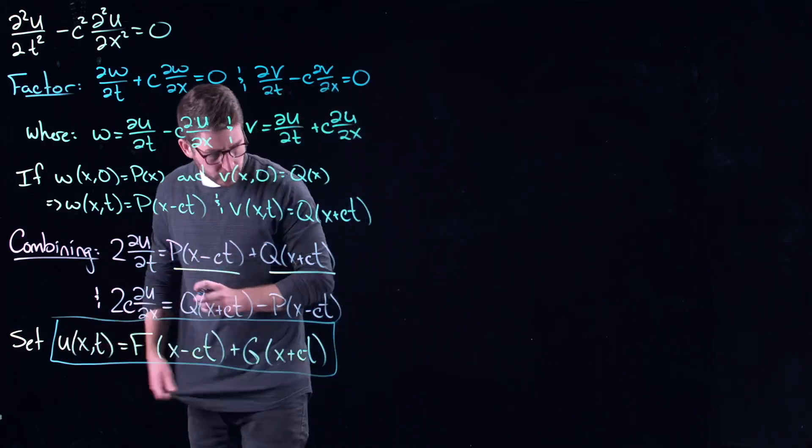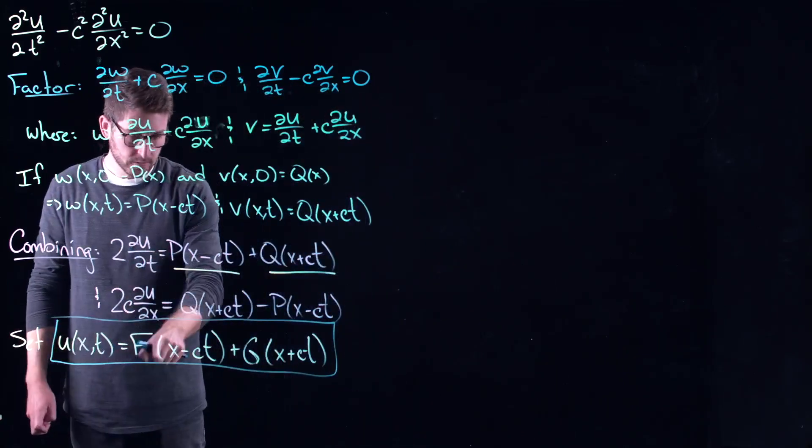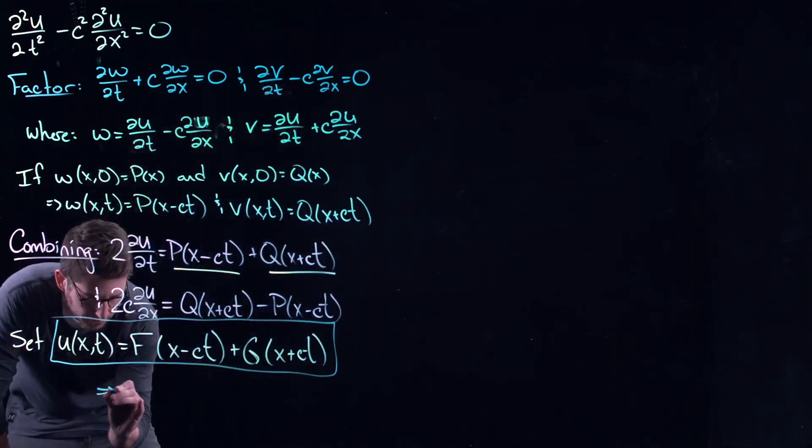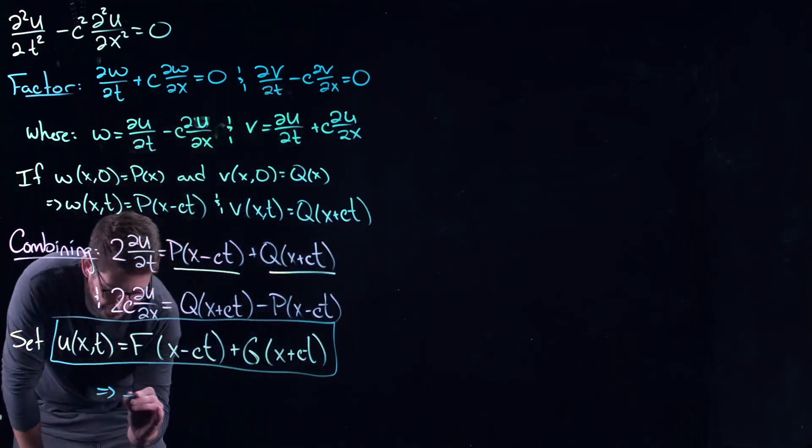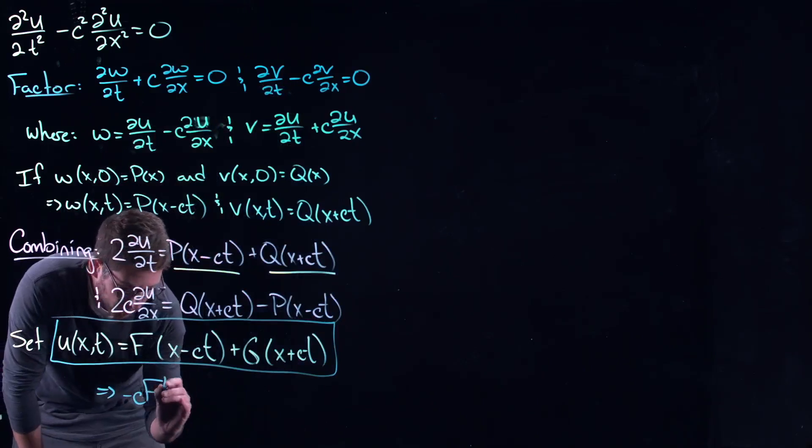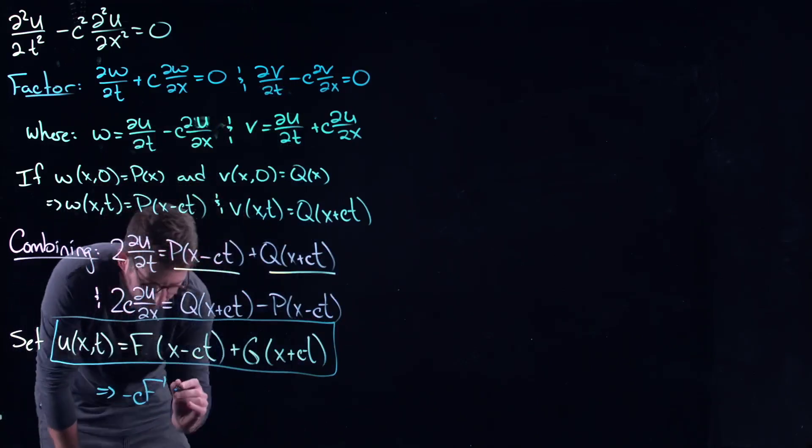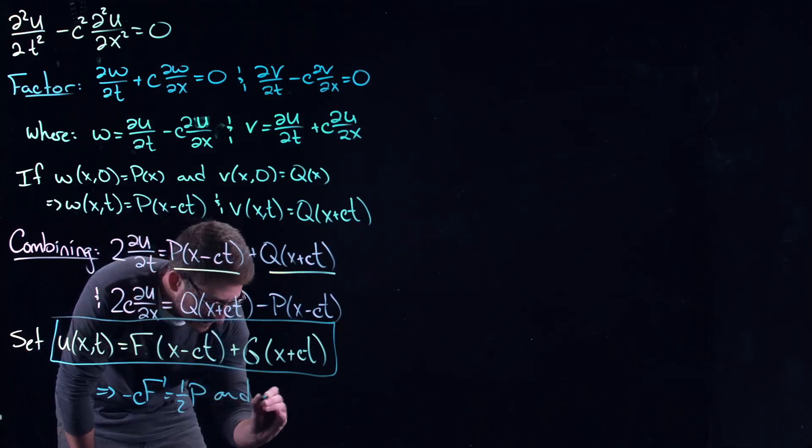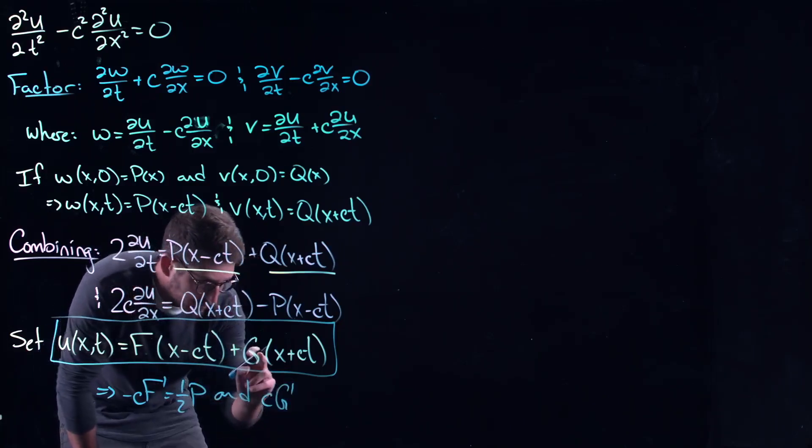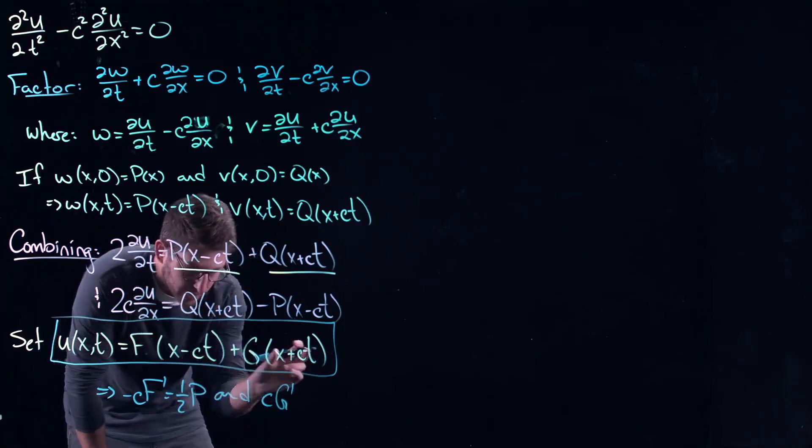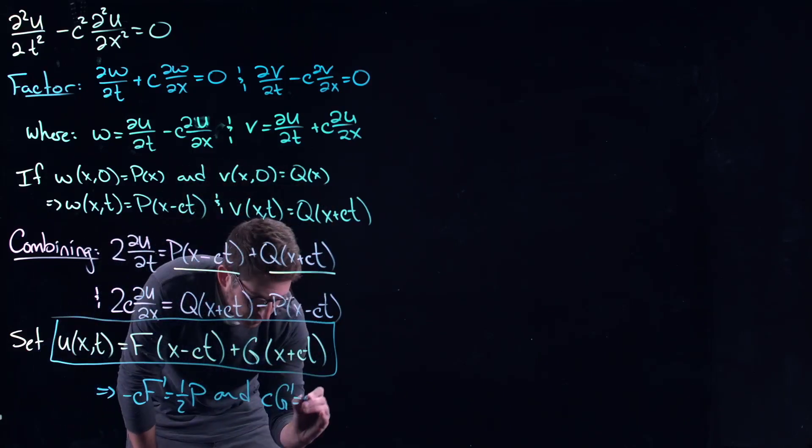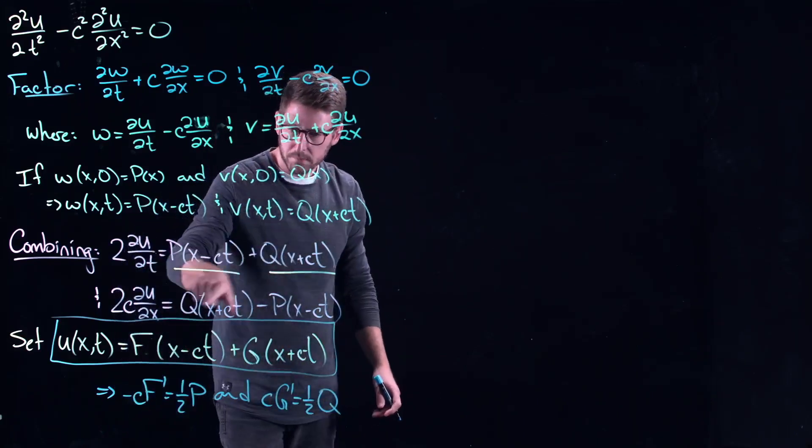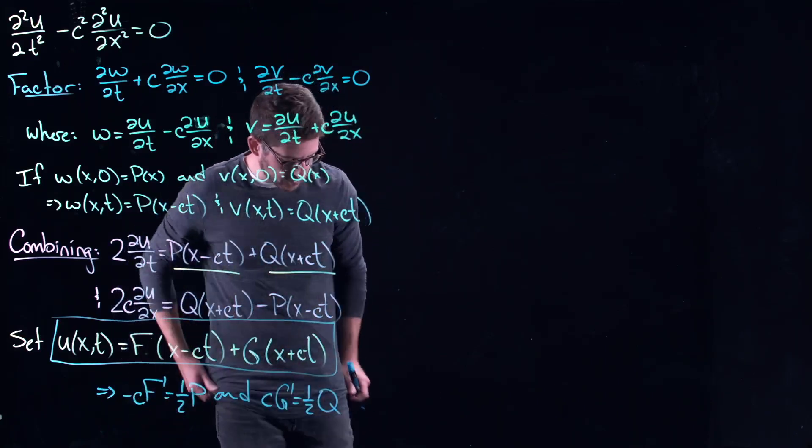So essentially what this would do is if you take these pieces right here, you can see that this will give you that minus C times F prime, the derivative of the original profile F, is equal to one half of P. The derivative of G is equal to one half of Q. And all that you're doing here is really just matching up profiles and rearranging these two pieces.